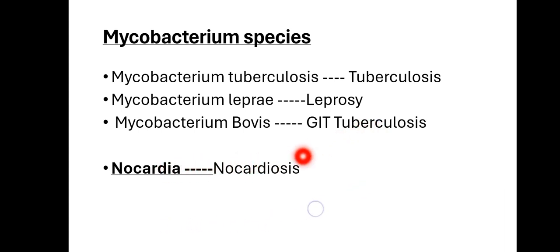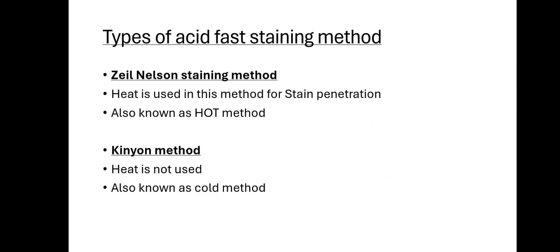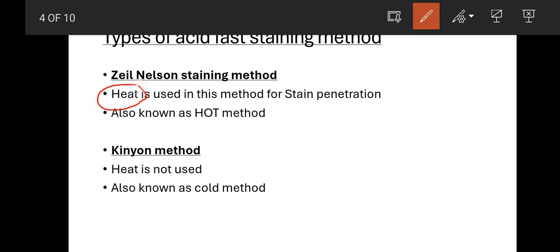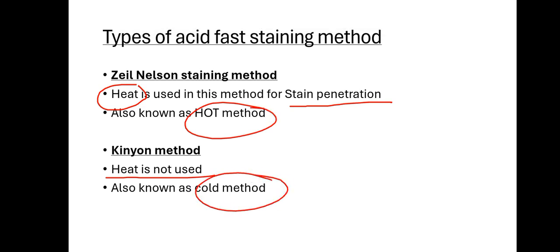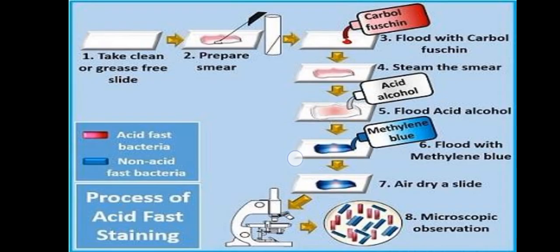Then we have Nocardia. For acid fast staining, there are two methods: Ziehl-Neelsen method and Kinyoun method. In the Ziehl-Neelsen method, heat is used — that is the main point to remember. Heat is used for the penetration of the stain. Because of this, it is called the hot method. The Kinyoun method does not use heat, so it is called the cold method. The commonly used method is the Ziehl-Neelsen method, which we will study in detail.